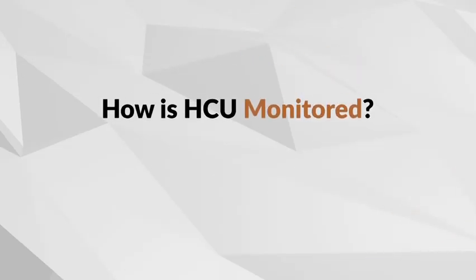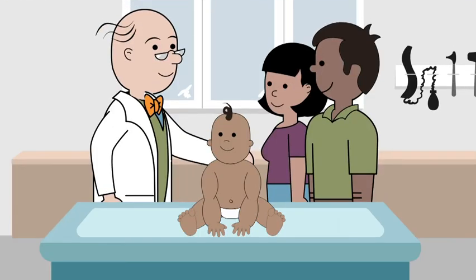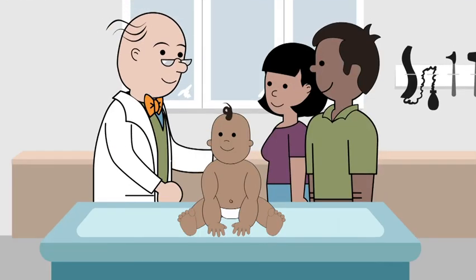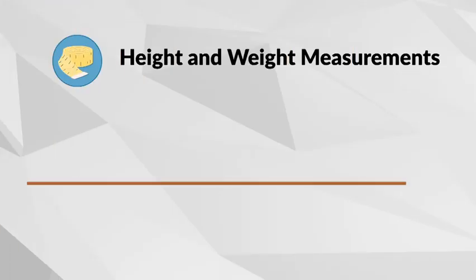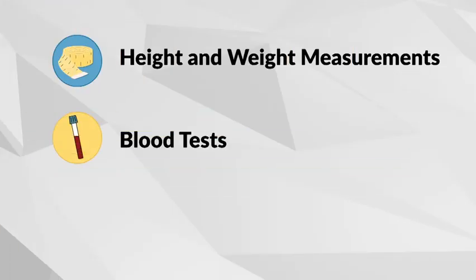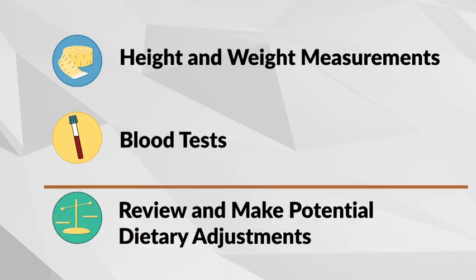For every child, regular checkups are essential. They are especially important for a child with HCU. During your clinic visit, your baby's height and weight will be measured. Blood tests will be taken to check amino acid and nutrient levels. You will review your child's blood tests, growth, development, and current diet and make adjustments accordingly.